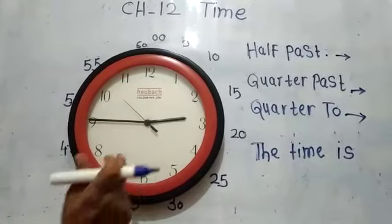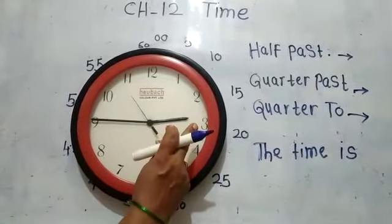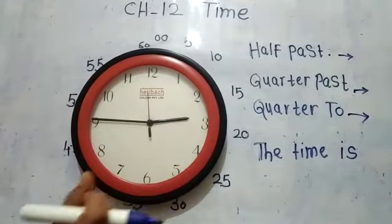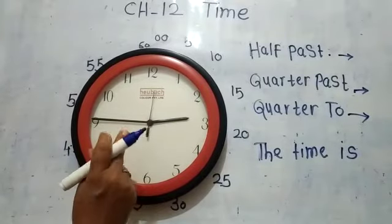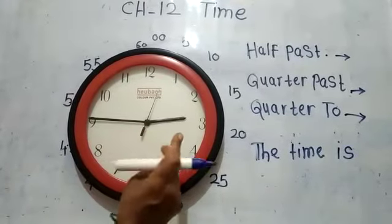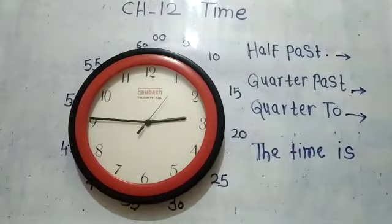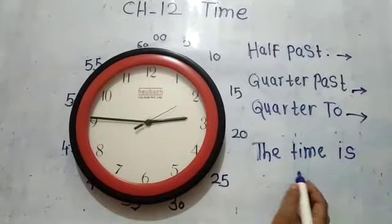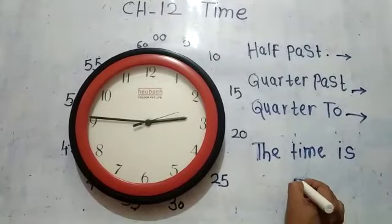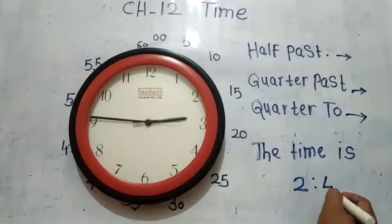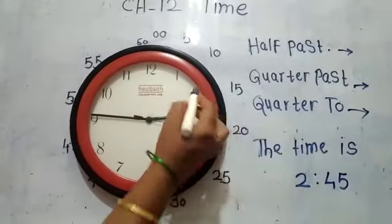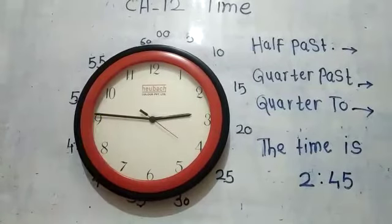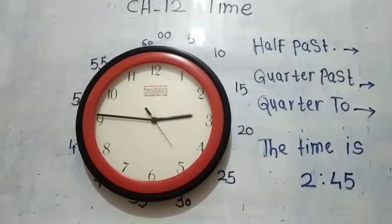Look here — the time shown on the clock is 45 minutes past 2. We can write it as: the time is 2:45. Two hours and 45 minutes — and this is quarter to three.